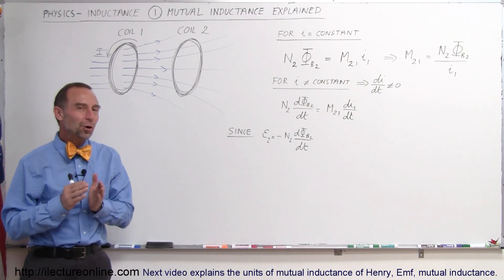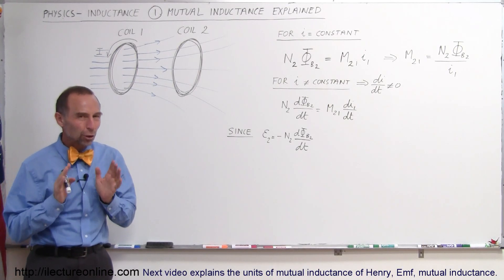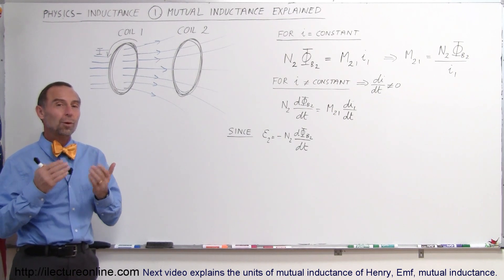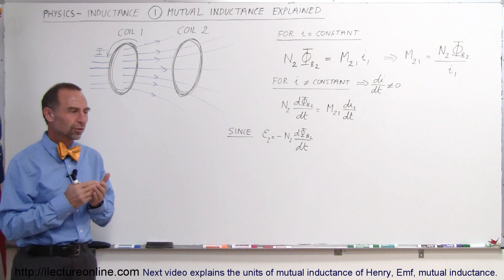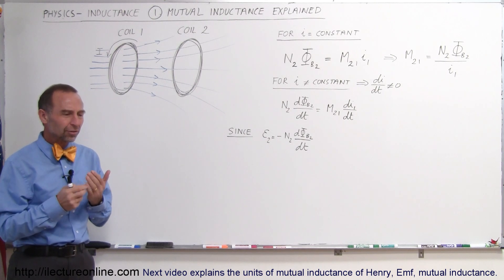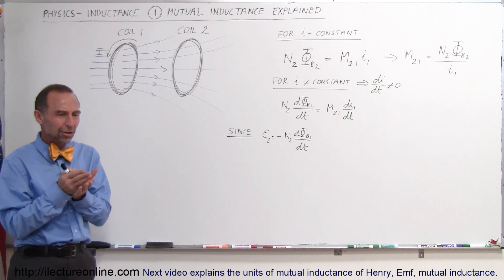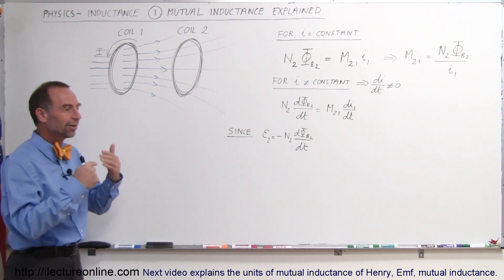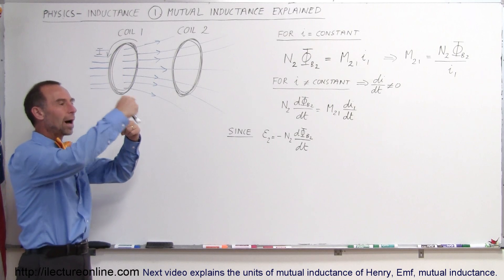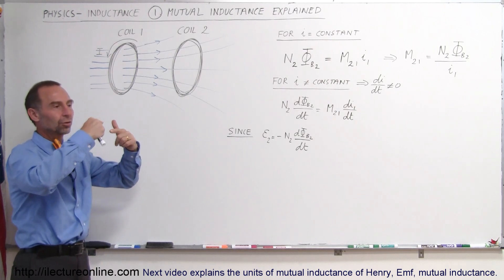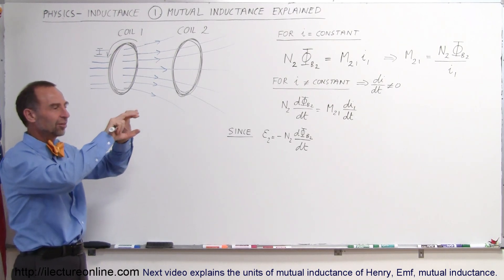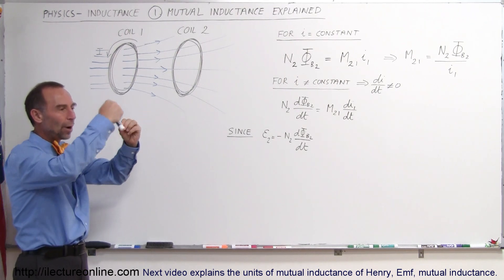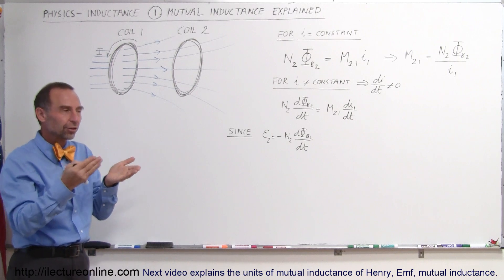Welcome to Electron Online. In this video and the ones to follow, we're going to take a closer look at the concept of inductance, starting with what we call mutual inductance. The word inductance is related to something we call an inductor, and a better word for inductor is a coil. A coil is simply a wire wound around a cylindrical object — take a cardboard or wooden cylinder, wrap a wire around it, and you have a coil or an inductor.